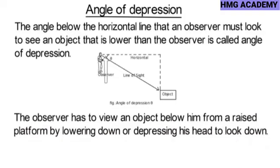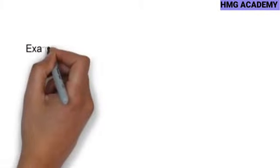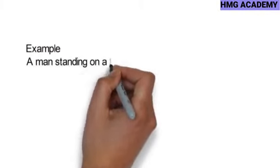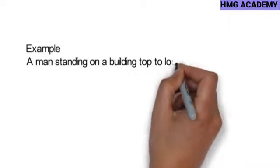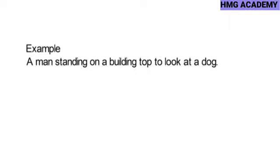An example of angle of depression is a man standing on top of a building looking at a dog below. If you are standing on a story building looking at a dog down, you are forming an angle of depression. Or, if you stand on top of your desk in school and look at your pencil on the floor, you are forming an angle of depression.